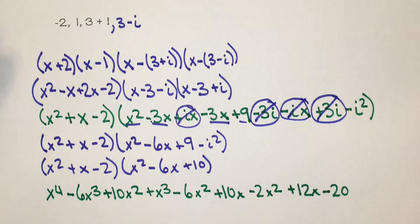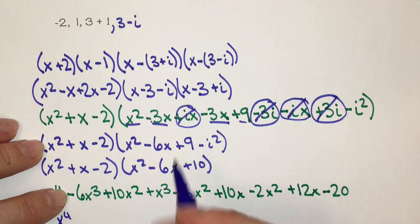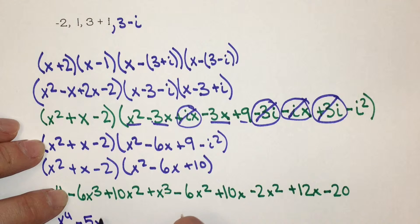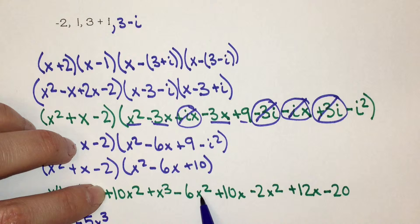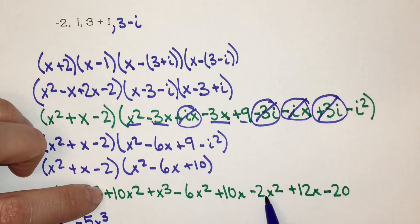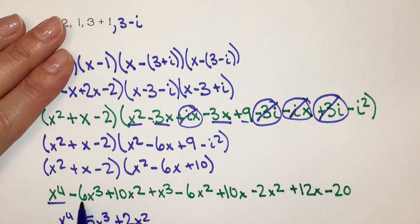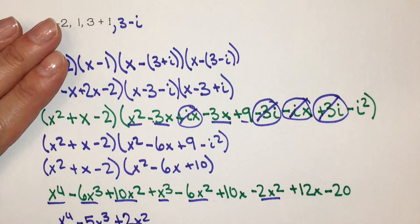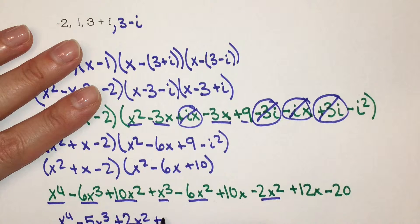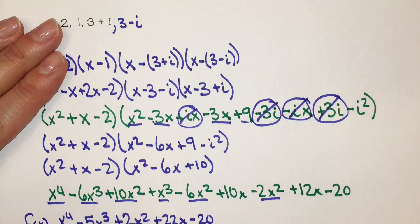Combining like terms in descending order: x to the 4th, negative 6x cubed plus x cubed is negative 5x cubed, 10x squared minus 6x squared is 4x squared minus 2x squared gives 2x squared, then 10x plus 12x is 22x, minus 20. So f of x equals x to the 4th minus 5x cubed plus 2x squared plus 22x minus 20.